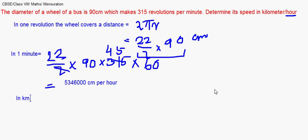So to convert it in kilometers it will be divided by 100000 and that's giving me 53.46 kilometer per hour. Hope you followed it, we take up another question.